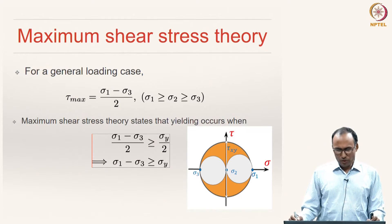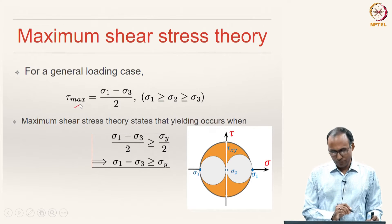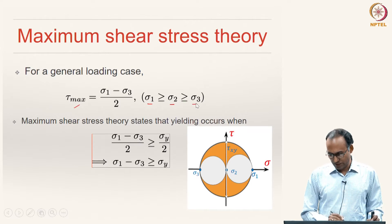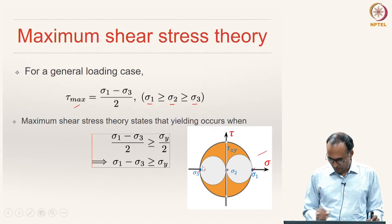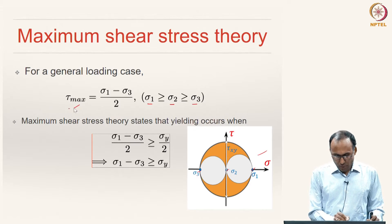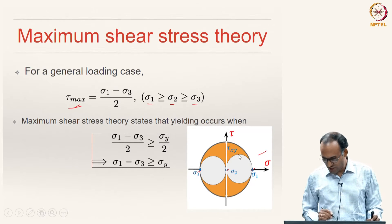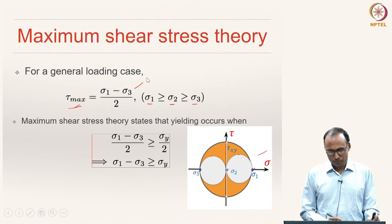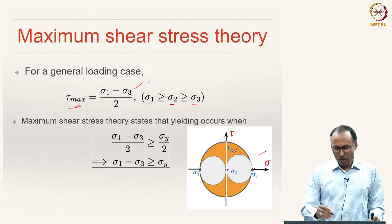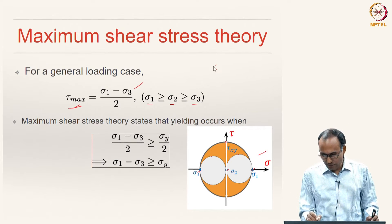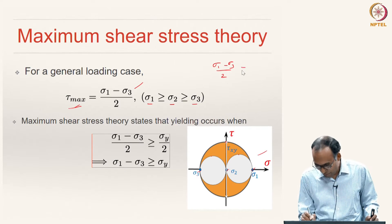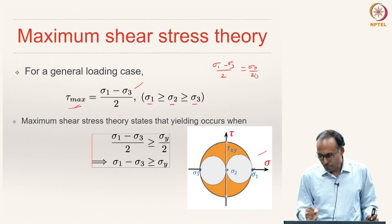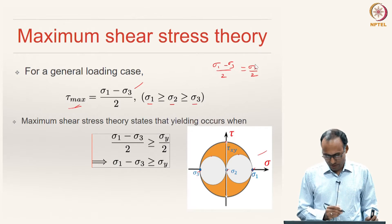For a general loading case, with sigma 1 greater than sigma 2 greater than sigma 3 (the three-dimensional case), tau_max can be written as sigma 1 minus sigma 3 divided by 2. While there are other shear stress components, this is the maximum shear stress. The maximum shear stress theory essentially means sigma 1 minus sigma 3 divided by 2 should equal sigma_y divided by 2 (the shear yield strength) — that is when failure happens.